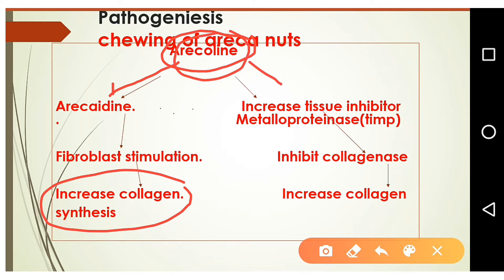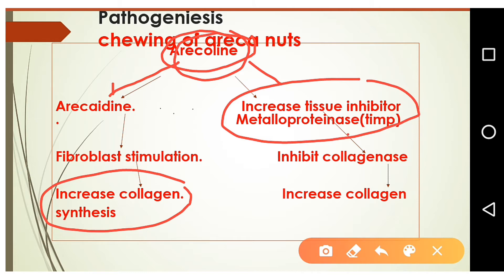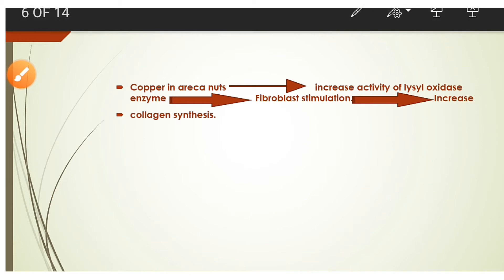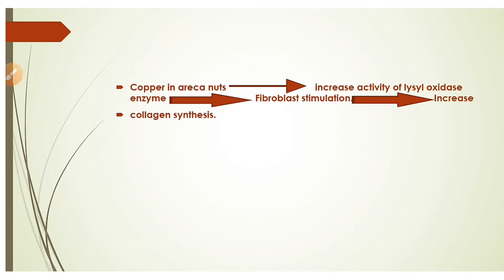TIMP's main function is to inhibit collagenase. As TIMP increases, it causes more inhibition of collagenase — the enzyme that breaks down collagen. As collagenase is inhibited, collagen accumulates and is deposited in soft tissue, leading to stiffness of the oral cavity. Additionally, copper in areca nuts causes increased activity of lysyl oxidase enzyme, which stimulates fibroblasts to produce more collagen, which deposits in soft tissue causing further stiffness.